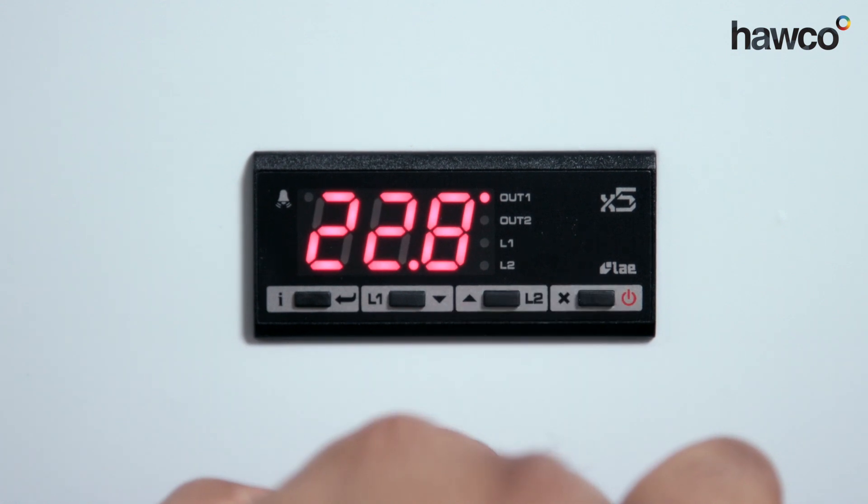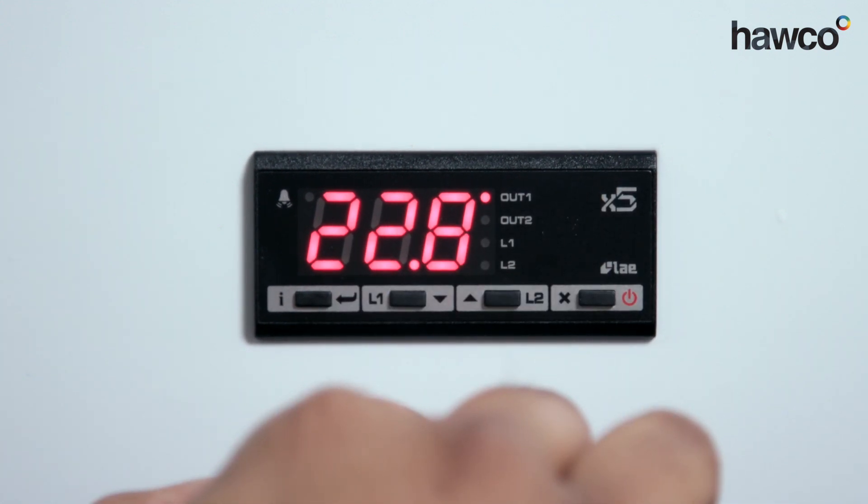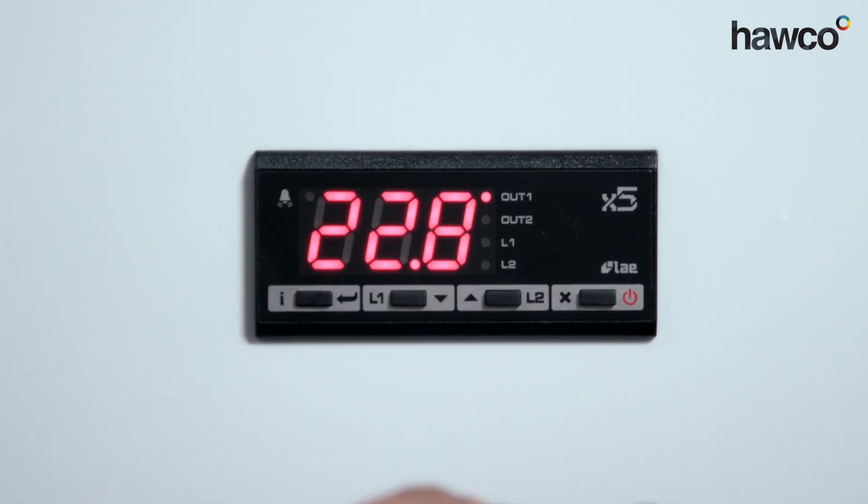By doing that, our set point at 20 degrees, when it goes lower by 2 degrees, down to 18 degrees, the heating will come in to bring it back up again. When it goes up to 22 degrees, you can see it's at 22.8. It's brought the cooling on to try and bring it back down to 20 degrees. And that is how you set up a dead band control on the AC1-5.